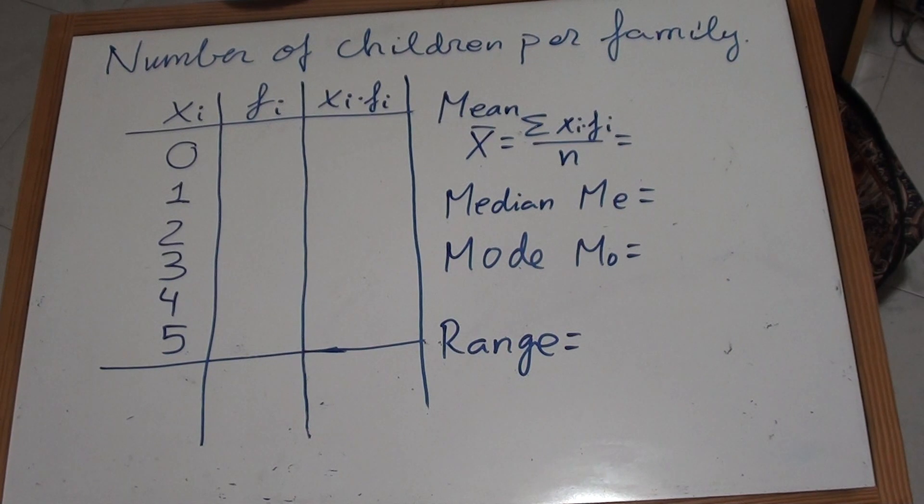The number of children per family is a quantitative variable, and inside quantitative variables it is discrete. Quantitative because it can be measured with numbers, and discrete because not all the numbers are suitable for this variable.